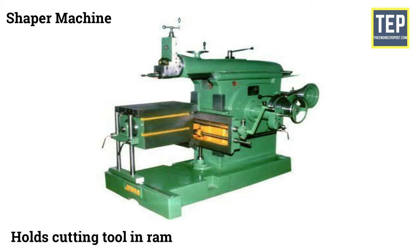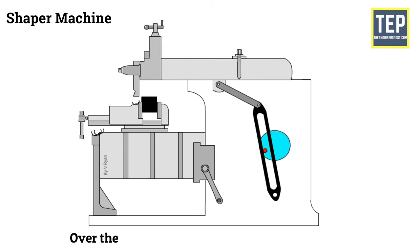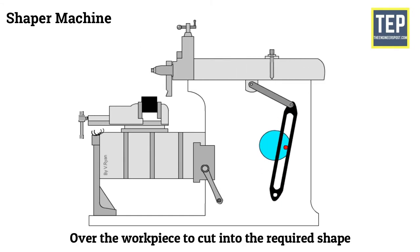The Shaper holds the cutting tool in RAM and workpiece is fixed in the table. During the forward stroke, the RAM holding the tool is reciprocating over the workpiece to cut into the required shape.